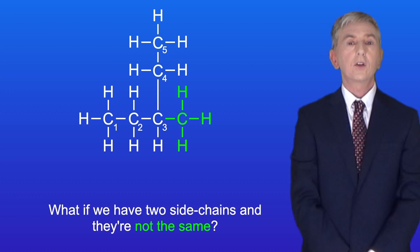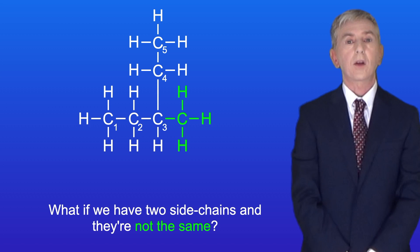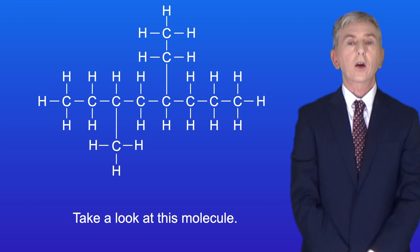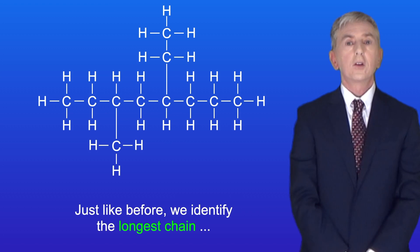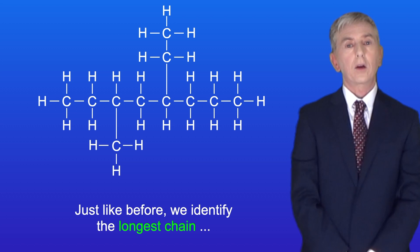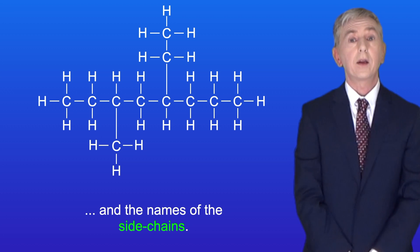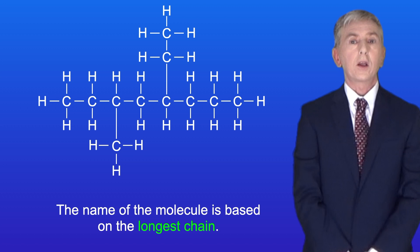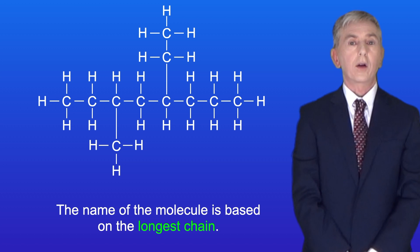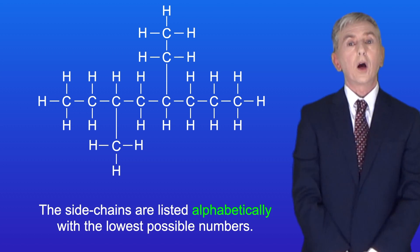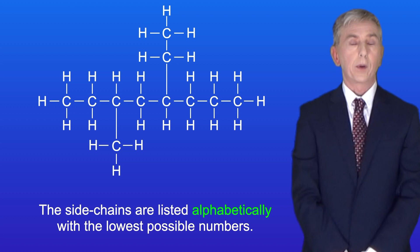What if we have two side chains and they're not the same? Take a look at this molecule. Just like before we identify the longest chain and the names of the side chains. The name of the molecule is based on the longest chain and the side chains are listed alphabetically with the lowest possible numbers.